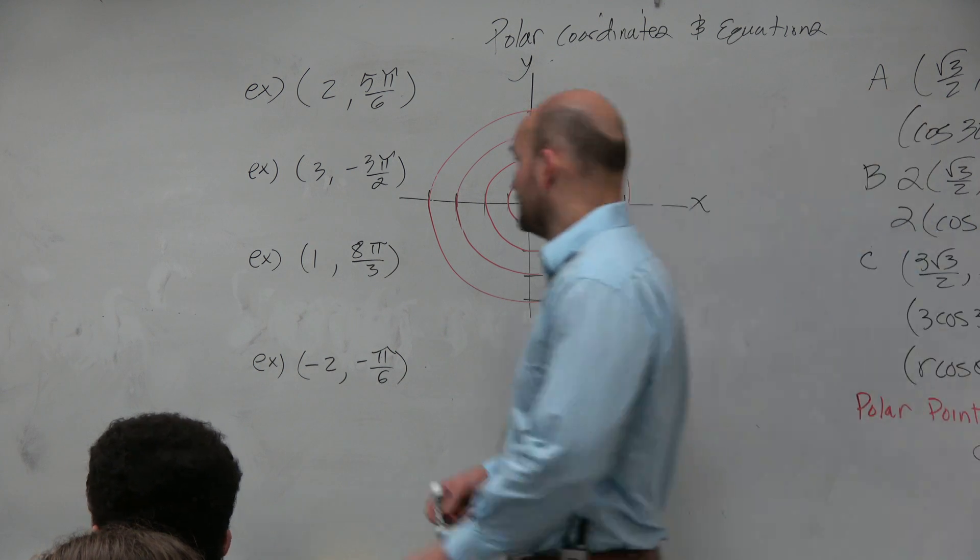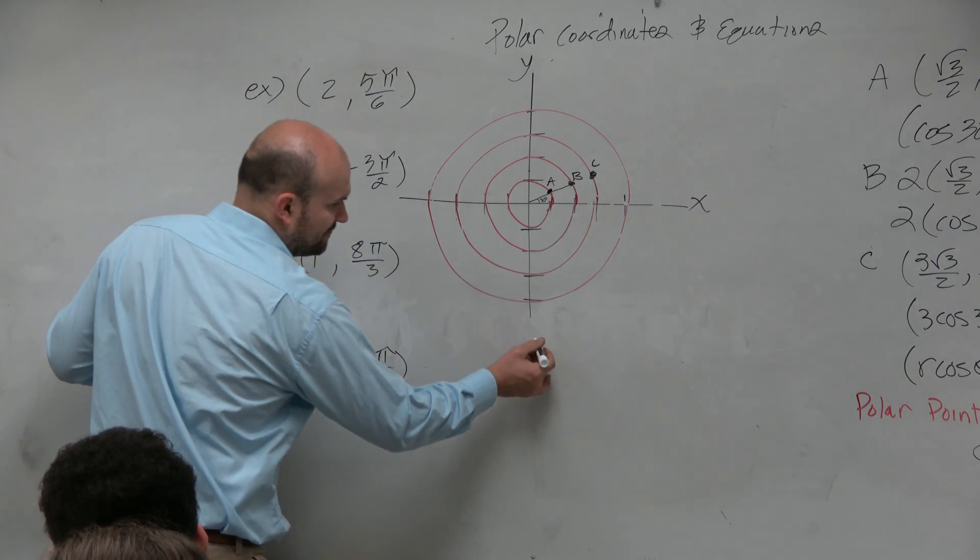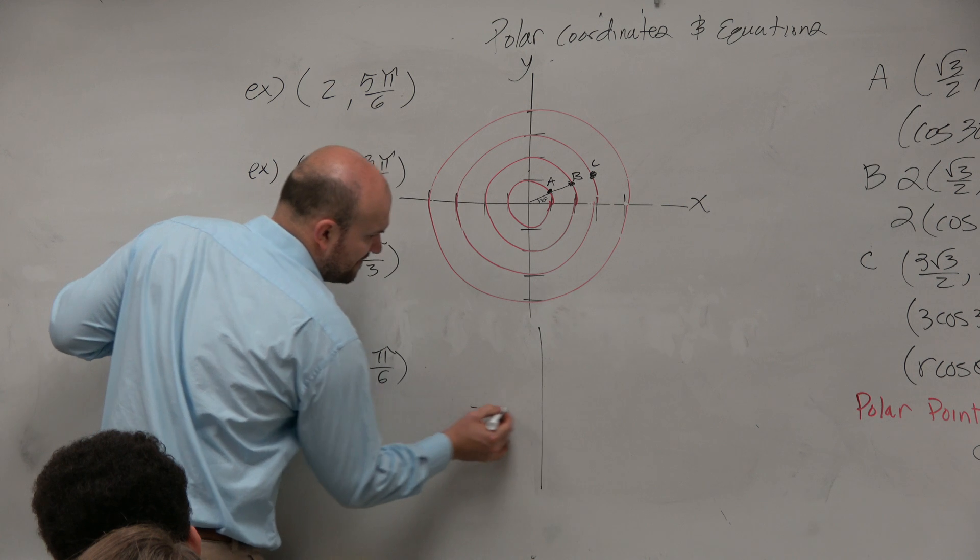If I wanted to plot 2, 5 pi over 6, first thing we just got to remember, guys, is where's 5 pi over 6?